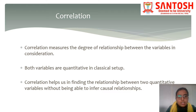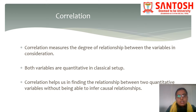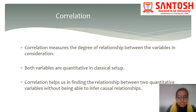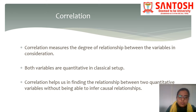Correlation measures the degree of relationship between the variables under consideration. If the value is very close to positive one, the correlation is said to be positive. If the correlation coefficient is very near to minus one, there is a strong negative relationship. The correlation coefficient lies between minus one and one. Both variables must be quantitative in the classical setup. Correlation helps us find the relationship between two quantitative variables without being able to infer a causal relationship.